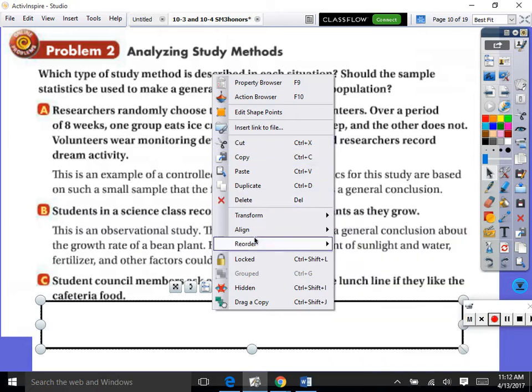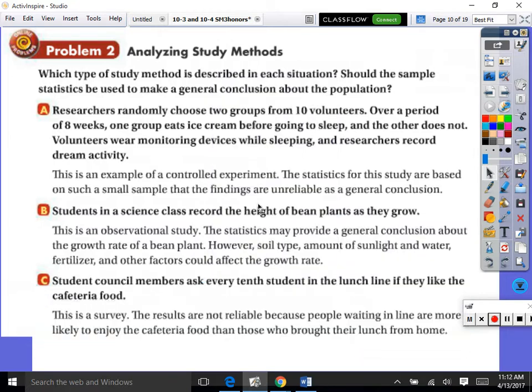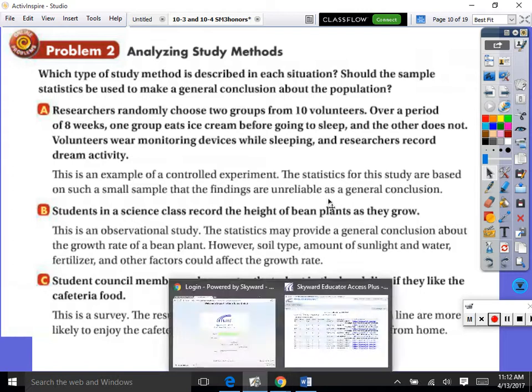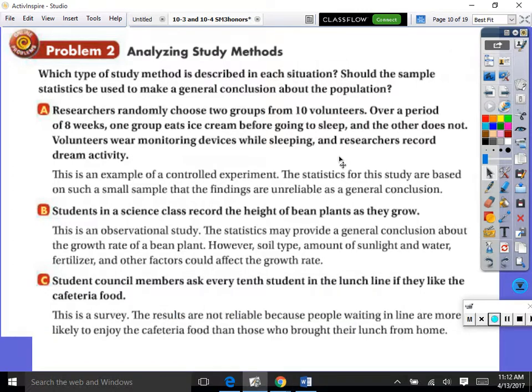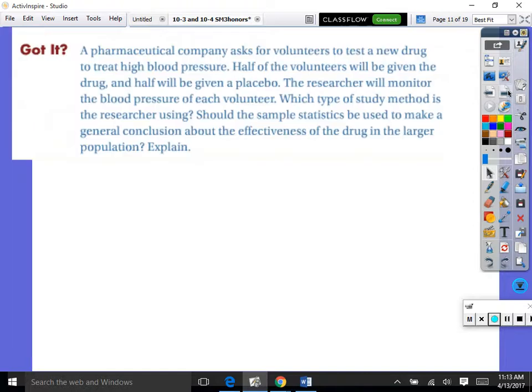Student council members ask every 10th student in line if they like cafeteria food. It's a survey, it's systematic and it's a survey. Good, way to go. You guys are so smart. The results are not reliable because people waiting in line are more likely to enjoy the cafeteria food than those who brought their lunch from home. But it could introduce a bias.